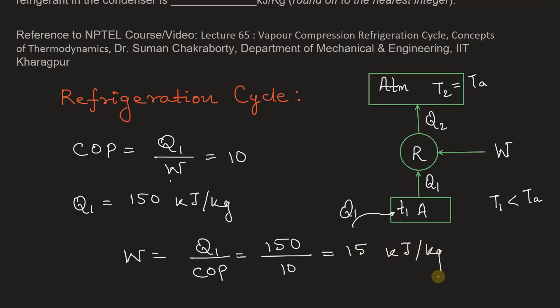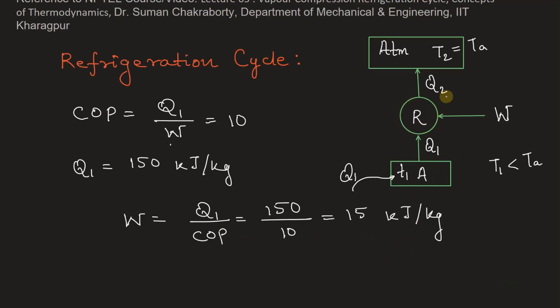Now the heat rejected by the refrigerant, that is Q2, is equal to Q1 that is already extracted from the body by the refrigerant, plus the work done on the refrigerant, that is W.